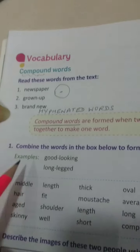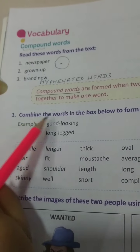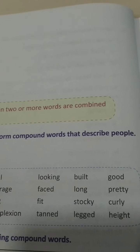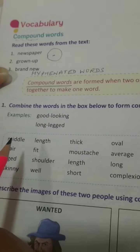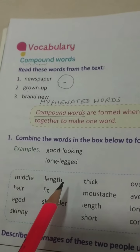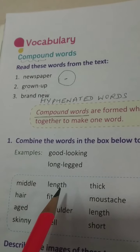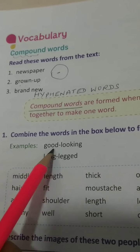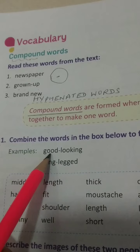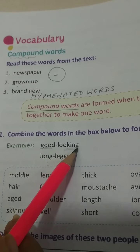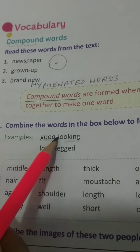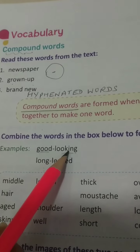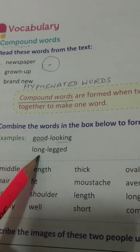See Question 1: combine the words in the box below to form compound words that describe people. Make sure you have to make compound words that describe the qualities of people. Two examples are given: good-looking — good is a separate word, looking is a separate word, but with a hyphen in between it becomes a new compound word, good-looking, like smart. And long-legged.